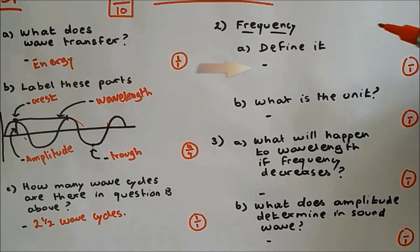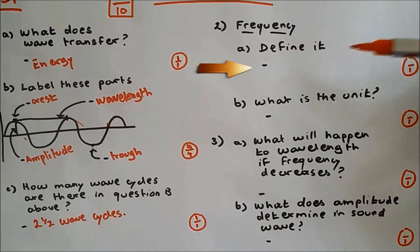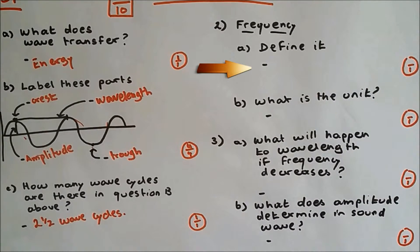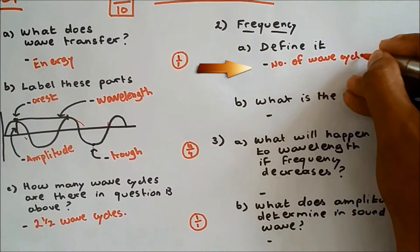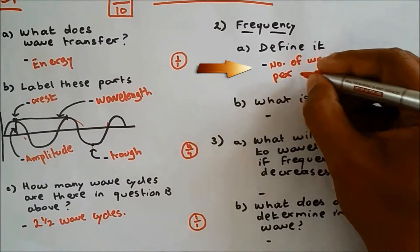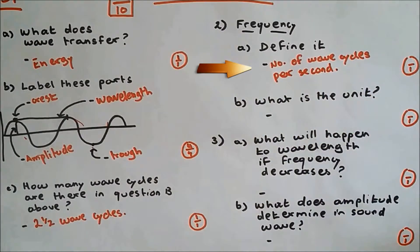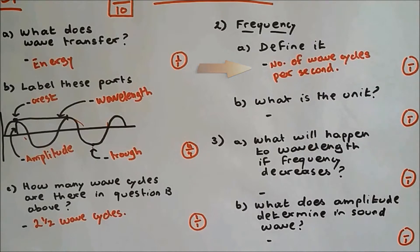Question number 2. Frequency. Define frequency. Frequency is the number of wave cycles per second. Or you could say number of waves passing in a second.